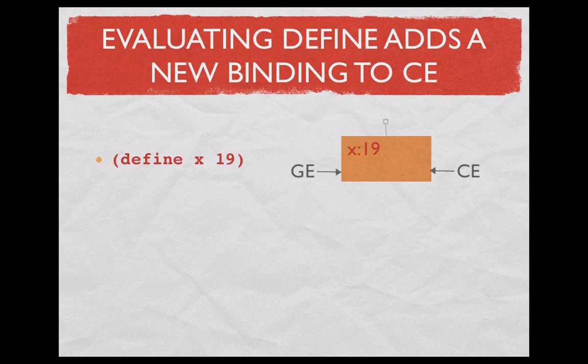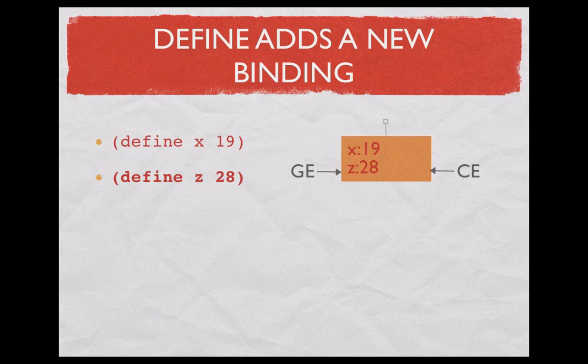If we evaluate a define statement, then we get a new binding. That's what define does. It adds a new binding to the current frame. Another define expression gives another binding in the current frame, nowhere else.